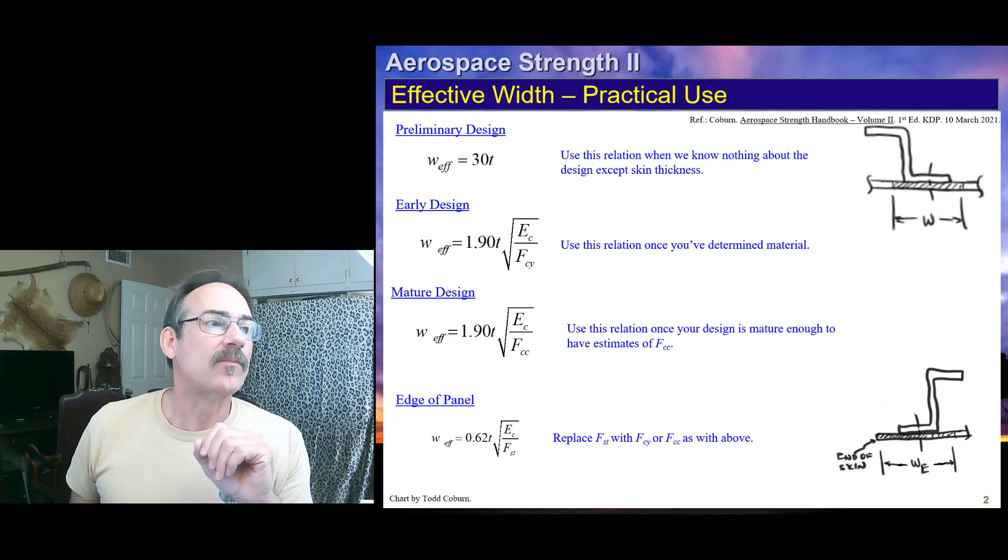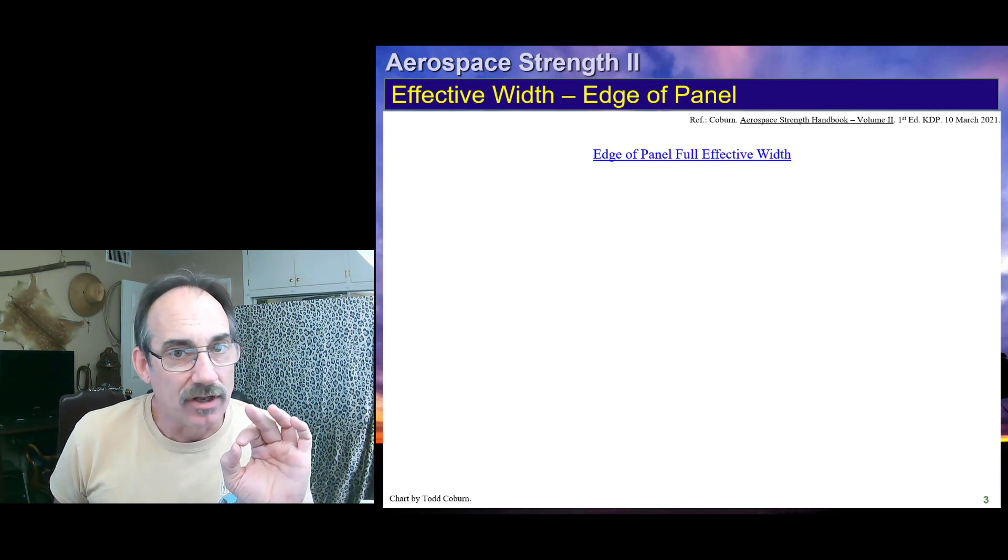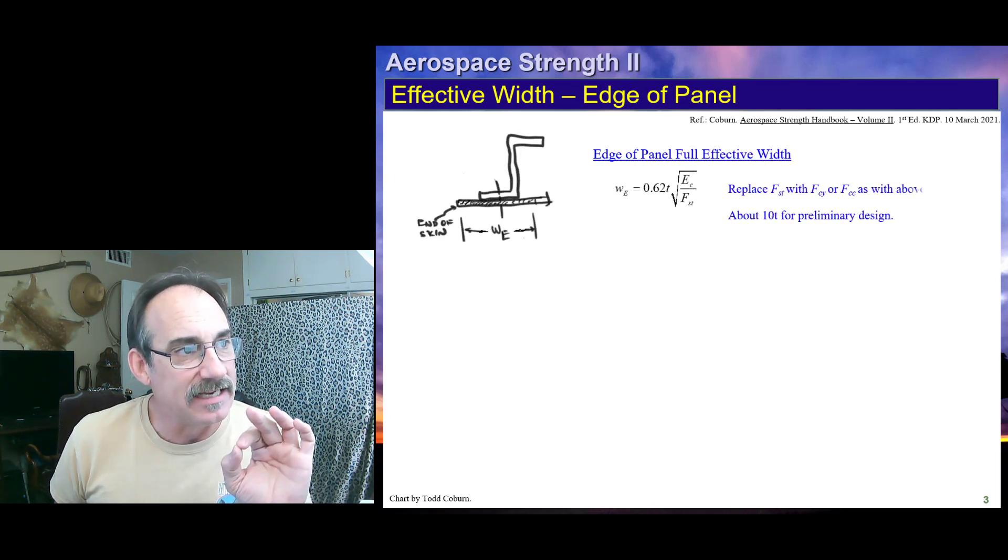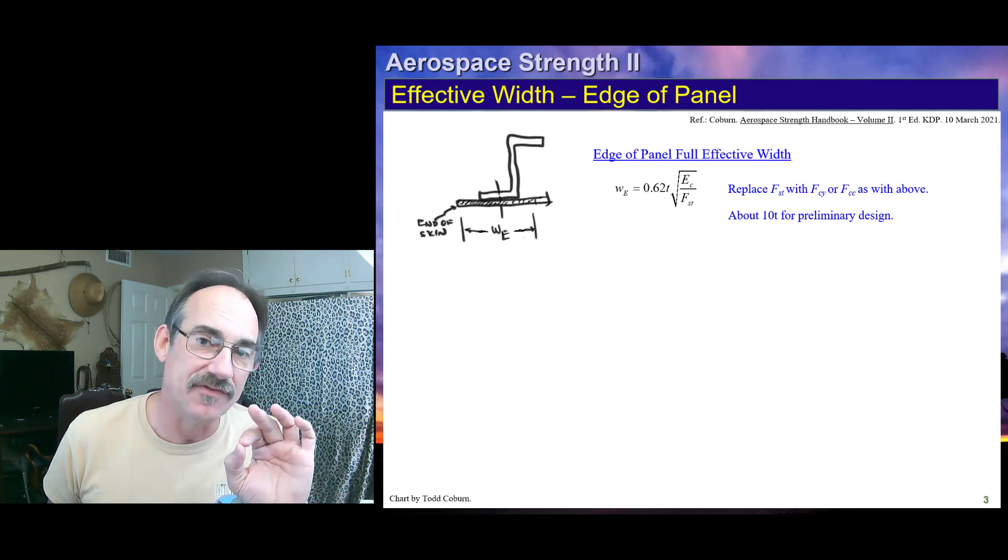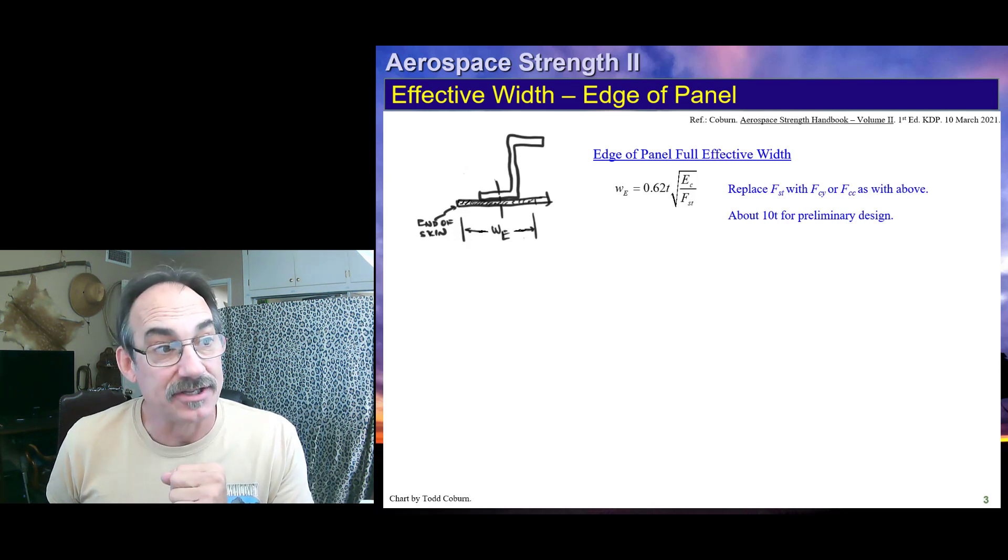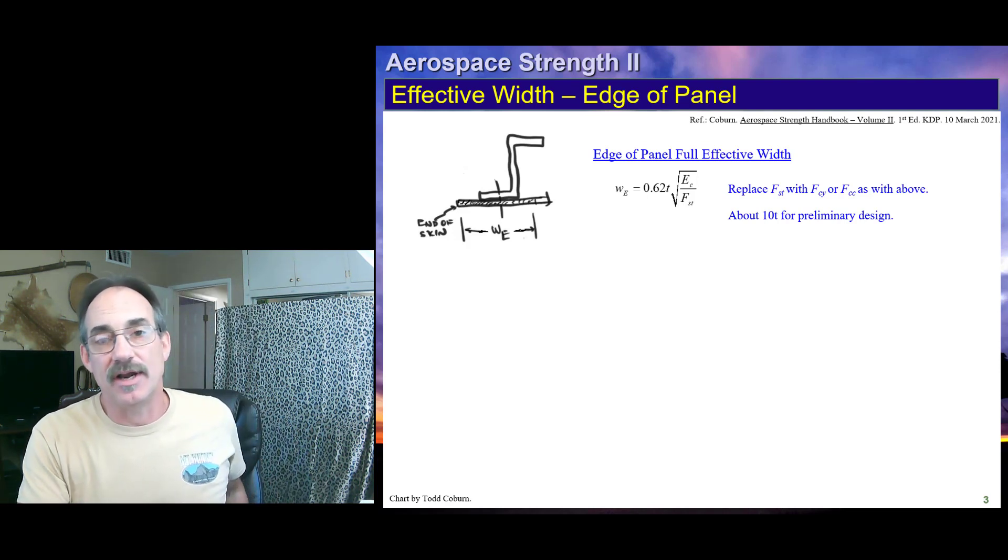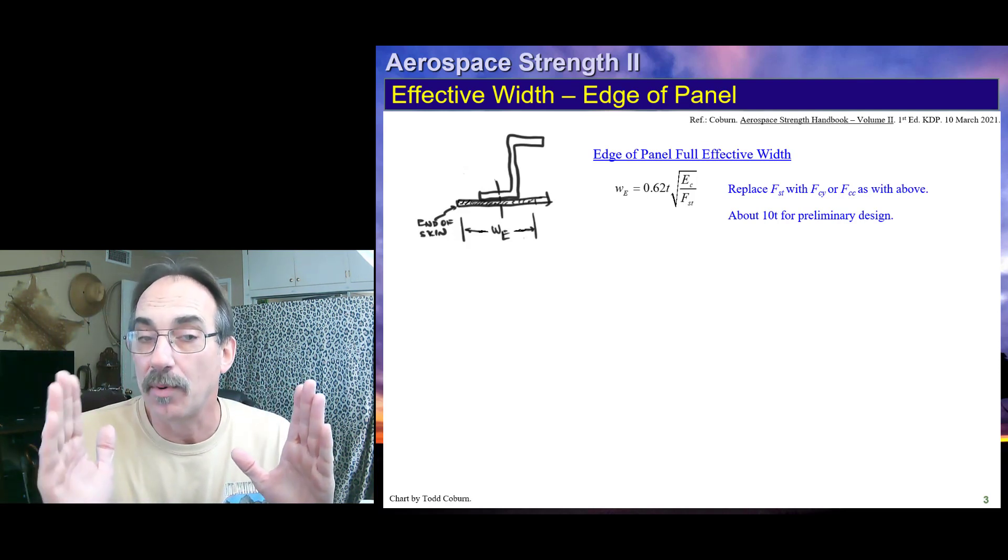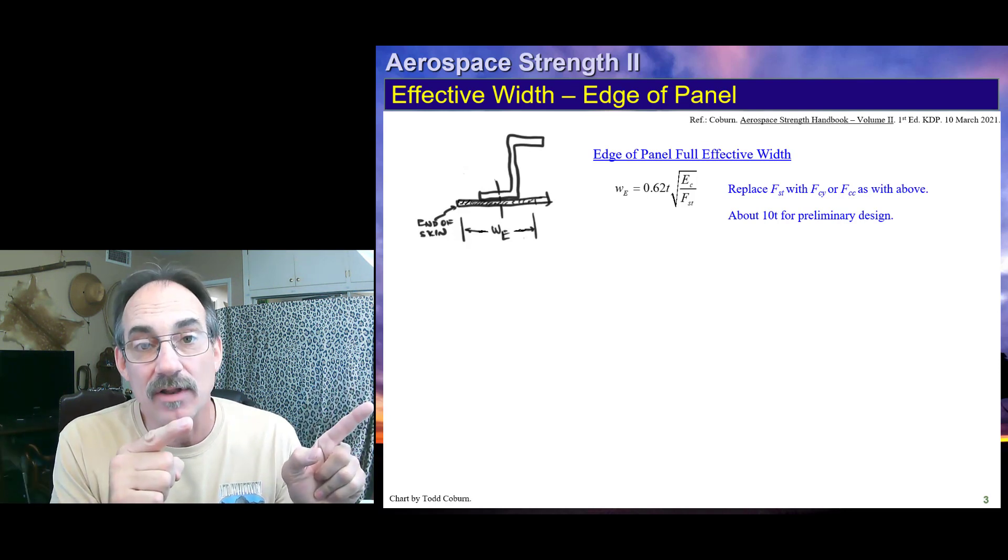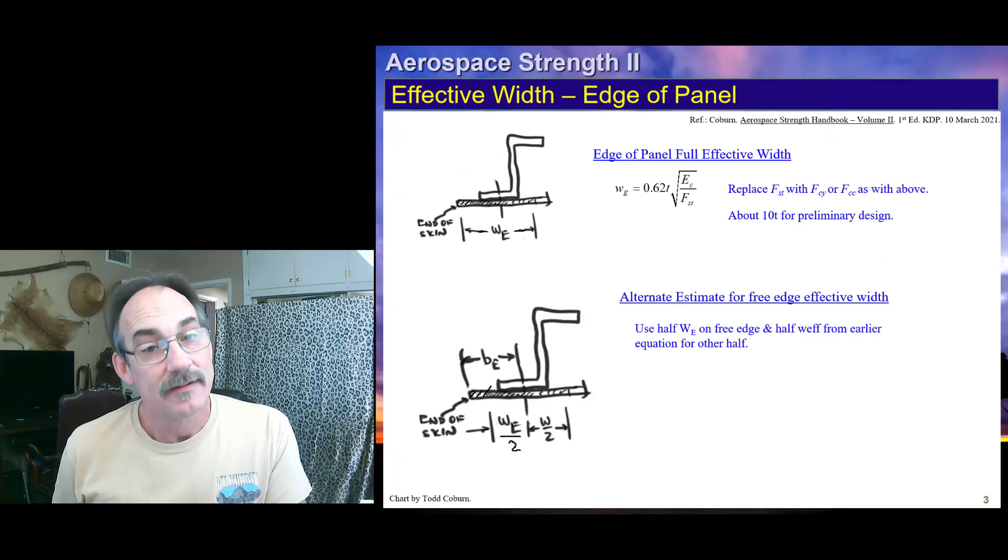Okay, so if we look further at that edge of the panel, then we see, we just looked at that equation. We saw that this is the effective width at the edge of the panel, the total effective width from the edge of the panel to the other side of the fastener. And if you were to plug in that same 2024-T3 properties into this equation, you'd get about 10T for preliminary design. So, that means we're using 30T for preliminary design for any fastener unless it's at the edge of a panel, in which case we're using 10T total effective width. Got that?